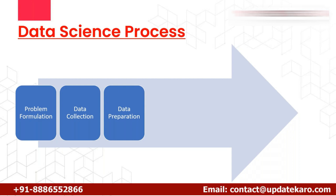An outlier is an extreme value — for example, normal age ranges from 0 to 80 or 100, but if someone has an age of 150, that's an outlier. You need to account for these points to properly prepare your data for model building. Additionally, remove any special characters or symbols present in your data.